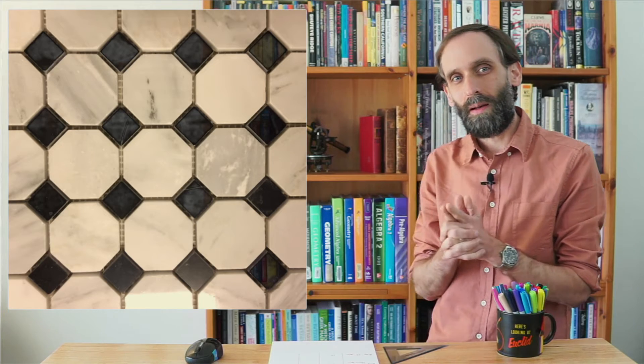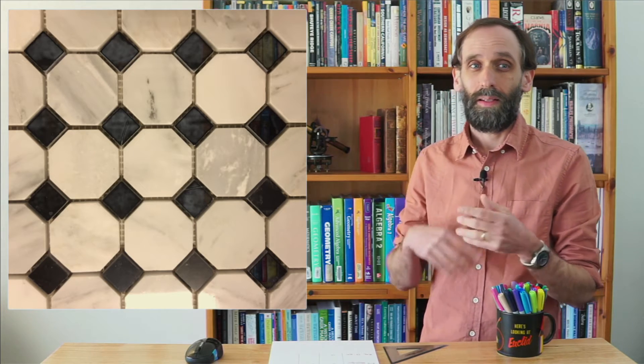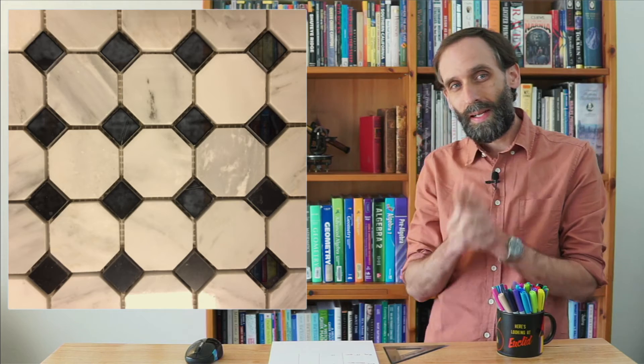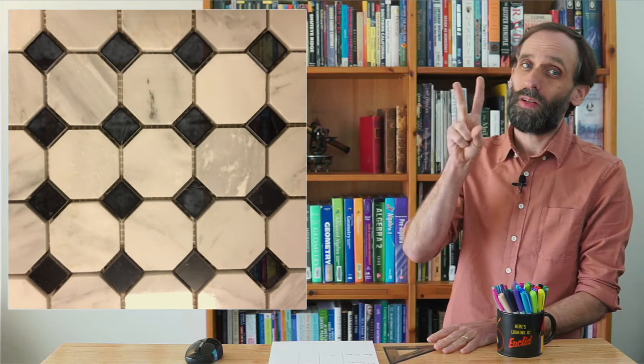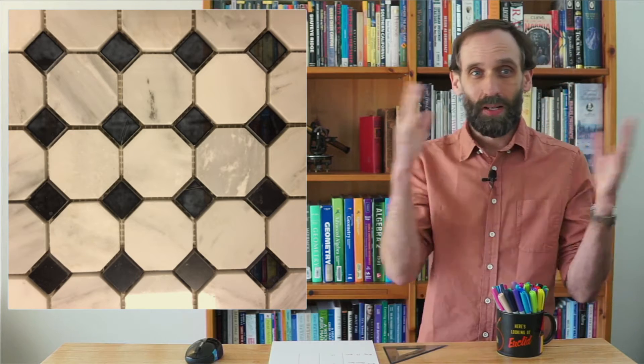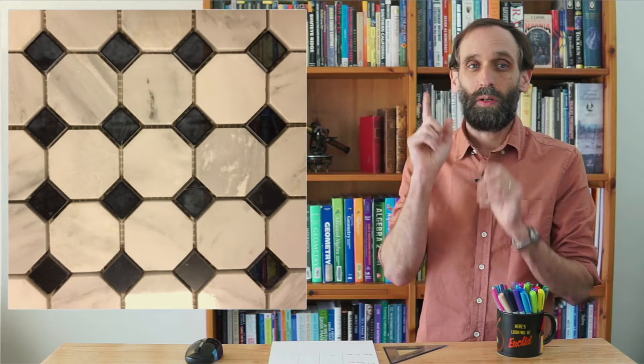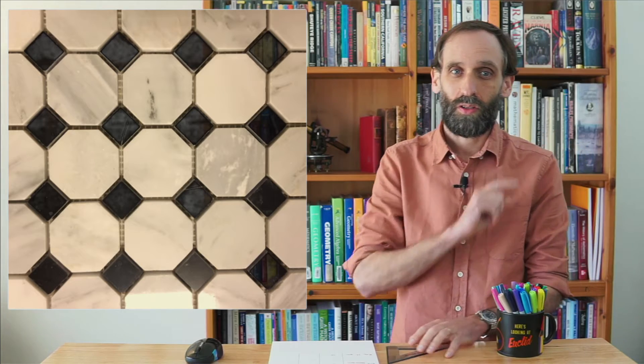One other thing I'll mention is that in this lesson and the next few lessons, we'll be looking at tilings of just one shape. Now this is a tiling with two different shapes, and you can have tiling with many different shapes, but we're going to be focusing on tilings made of just one shape.